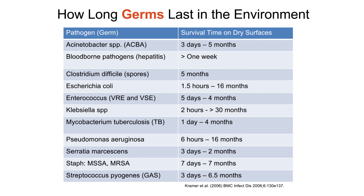C. diff is known as a spore-forming bacteria. This type of bacteria has a type of shell around it that makes it hard to kill. It is spread very easily in hospitals, especially from areas around the patient with C. diff. Looking at this chart, we can see how long different germs can survive in the hospital environment. C. diff can last in the environment for 5 months, and MRSA can last from 7 days to 7 months. This shows how important it is to clean and disinfect correctly. It can be hard to kill germs and get rid of them completely.